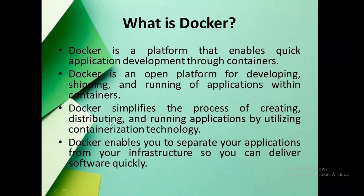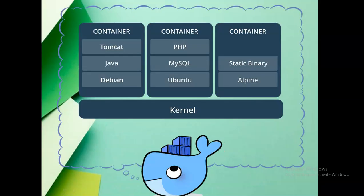Docker simplifies the process of creating, distributing, and running applications. It enables you to separate your application from your infrastructure so you can deliver software quickly. For example, a container can comprise a Tomcat web server, Java, and Debian OS combined together. Similarly, Alpine OS with an echo command, or Ubuntu OS with PHP and MySQL, can each form a container — automatically installed and executed wherever needed.